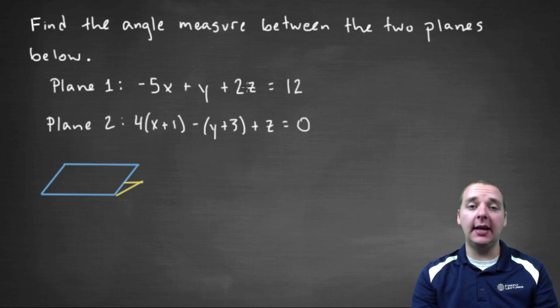And the other plane, and that plane is in what's called general form. And then the other plane is written in what we call standard form. Four times x plus one minus y plus three plus z equals zero. These planes here could have been written in either form. I just did one of each just to show you that you could do this regardless of what form that is written in.